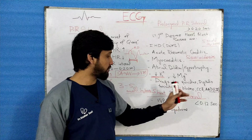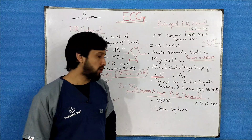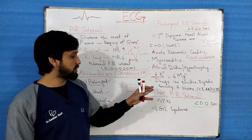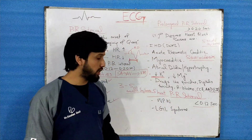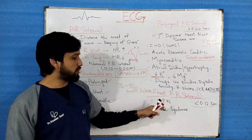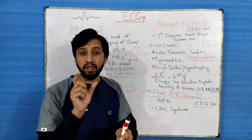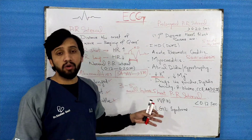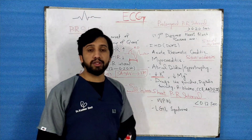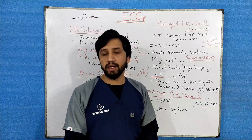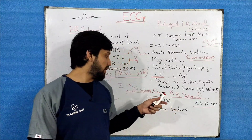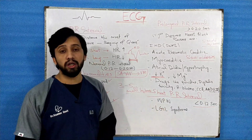The PR interval will be short when it is less than 0.12 seconds. Causes for short PR interval include WPW syndrome and LGL syndrome. In WPW syndrome you will see a delta wave on the ECG complex, while in LGL syndrome there is no delta wave. Other causes include steroid therapy, and there can also be a normal variant in infants.